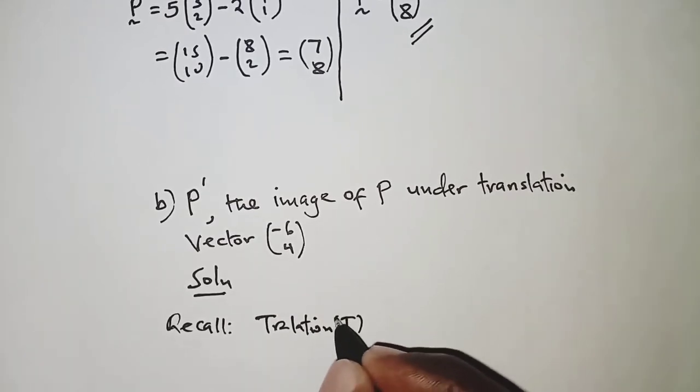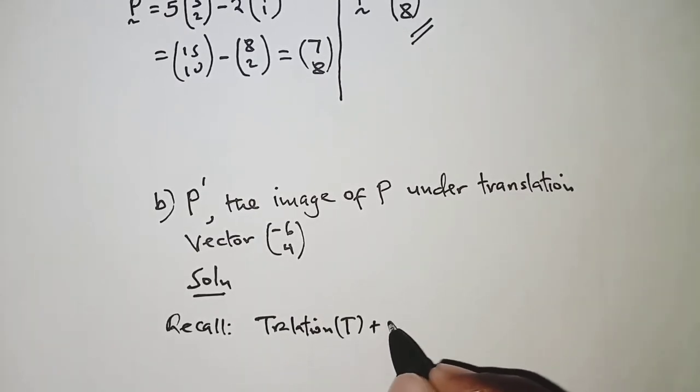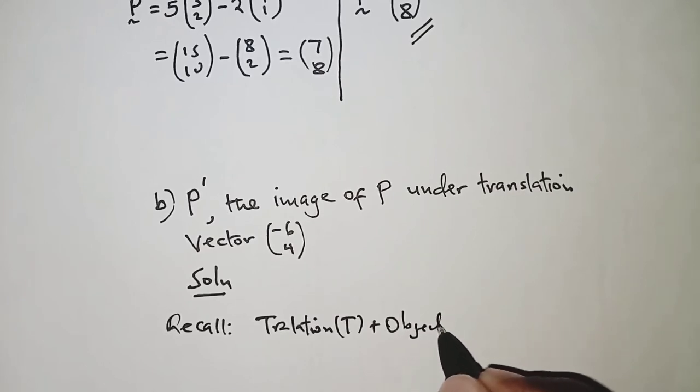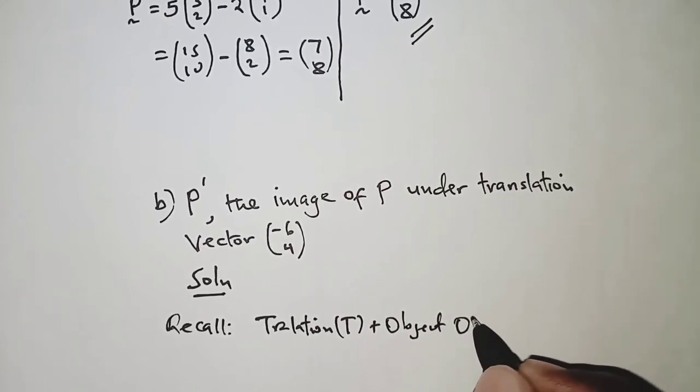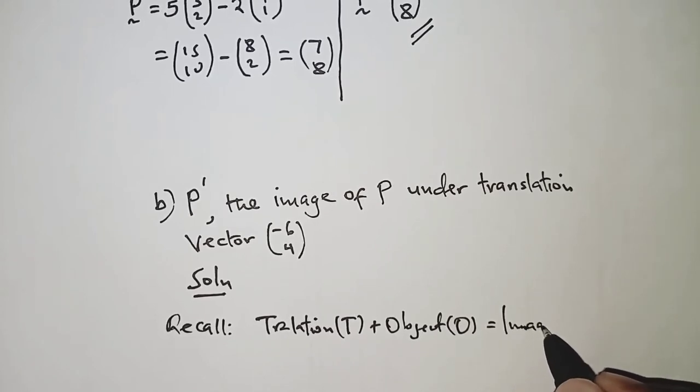T plus the object O should give us the image I.